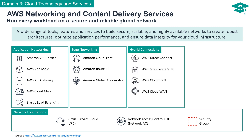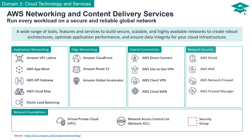There are various options for hybrid network connectivity such as AWS Direct Connect, AWS Site-to-Site VPN, AWS Client VPN, and AWS CloudWan.